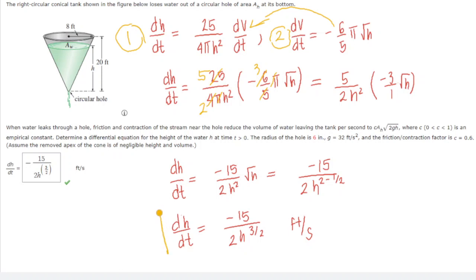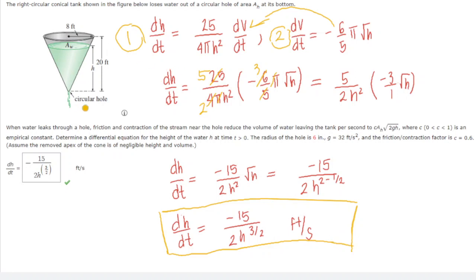Our final answer: dh/dt = −15/(2h^(3/2)). This is the rate of change of the height as the volume changes due to the water leaking out of the tank. We can verify that this answer is correct. That's all for this problem.